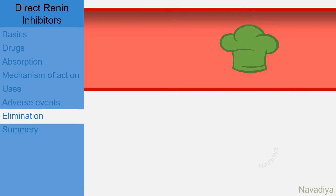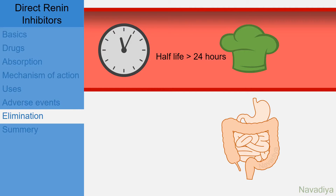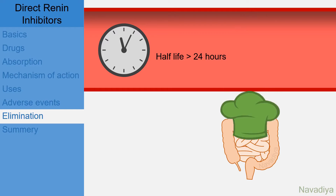Coming to the elimination. Its plasma half-life is more than 24 hours, so it is usually given once daily. Elimination occurs mainly in feces in unchanged form.